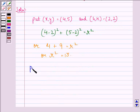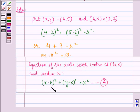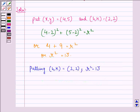Putting the point (h,k) as (2,2) and r² as 13 in this equation, we get (x-2)² + (y-2)² = 13.